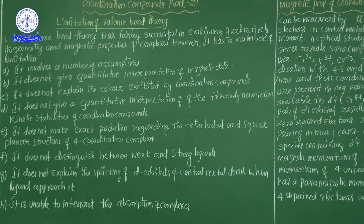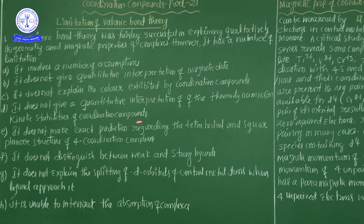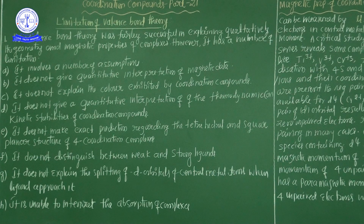The fourth important limitation: it does not give a quantitative interpretation of the thermodynamic or kinetic stability of coordination compounds. This theory does not clearly explain thermodynamic or kinetic stability. While it explains that ligands donate lone pairs of electrons to the central metal atom to form coordination covalent bonds (dative bonds), it cannot explain how coordination compounds become stable based on thermodynamic or kinetic rules.